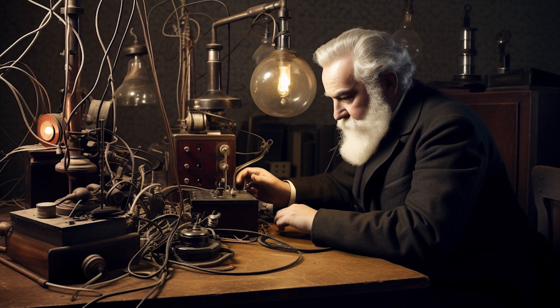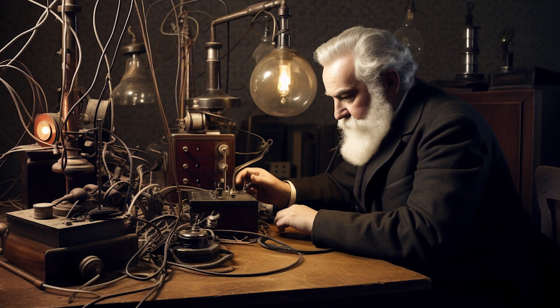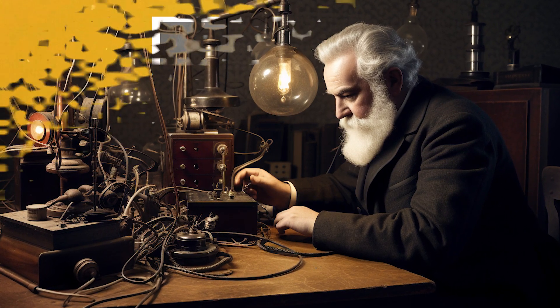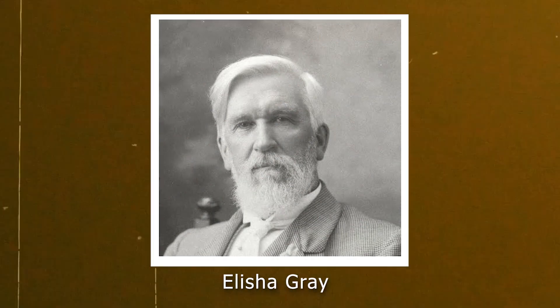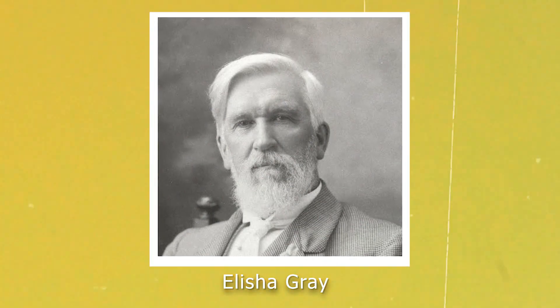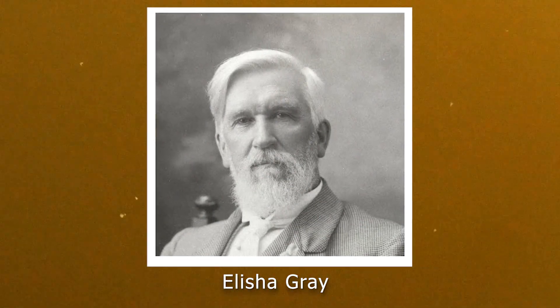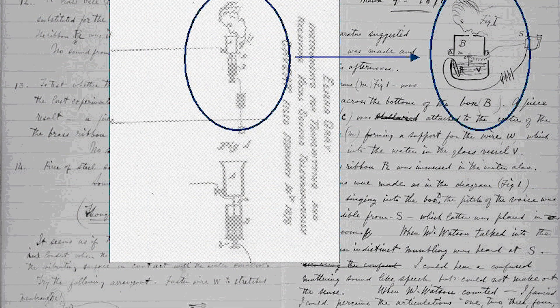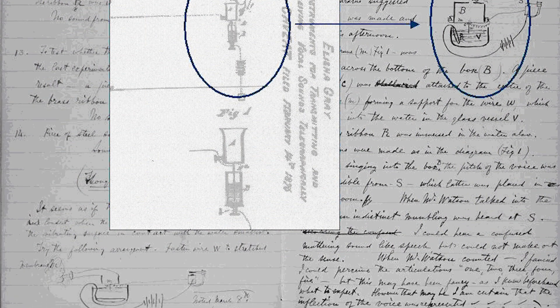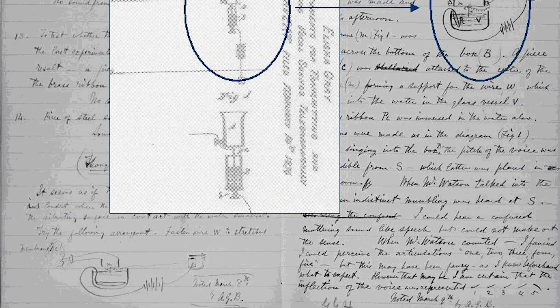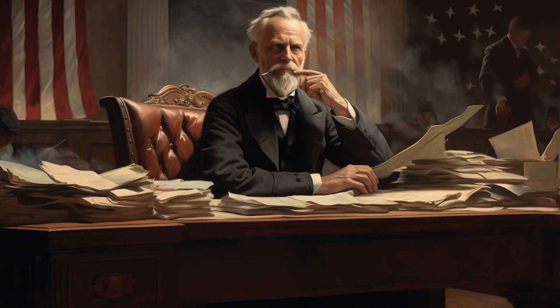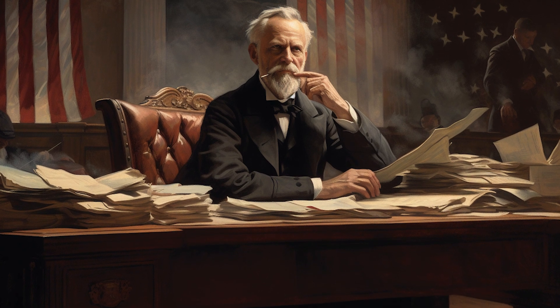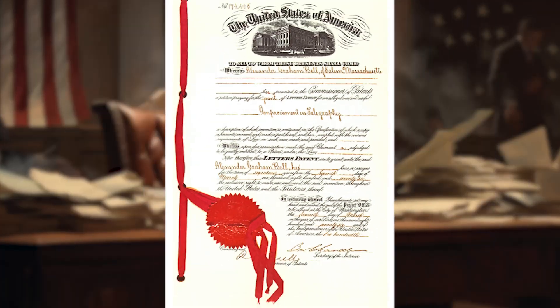However, Bell was not the only inventor working on the telephone. Elijah Gray also developed similar telephone designs around the same time. Gray filed for a patent on a telephone design on the same day as Bell. The patent office held a contentious legal battle between the two inventors, ultimately awarding the patent to Bell.